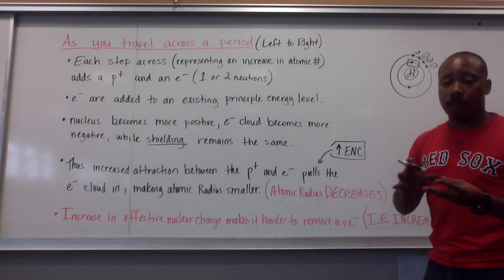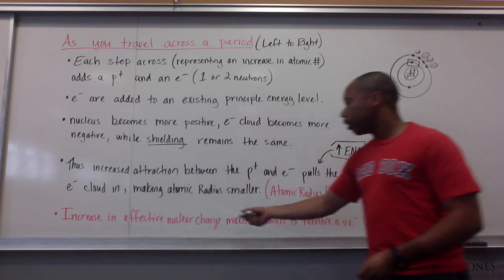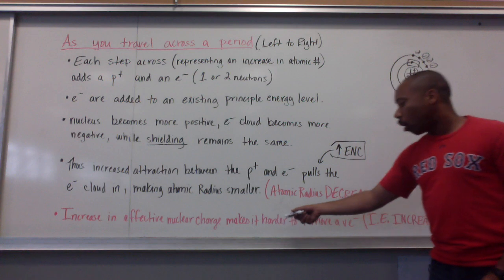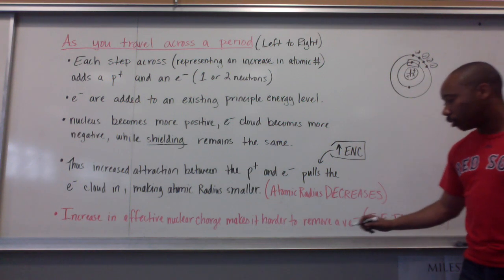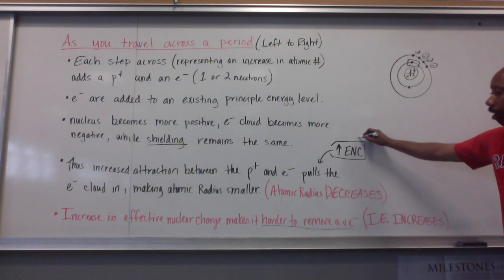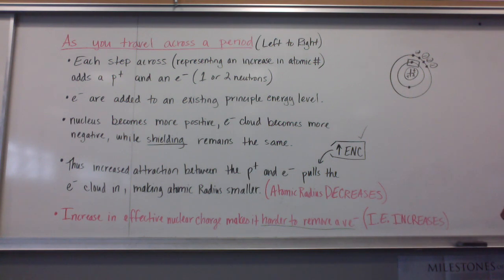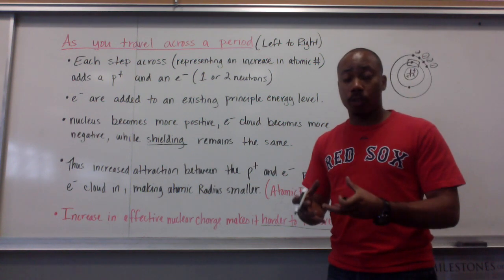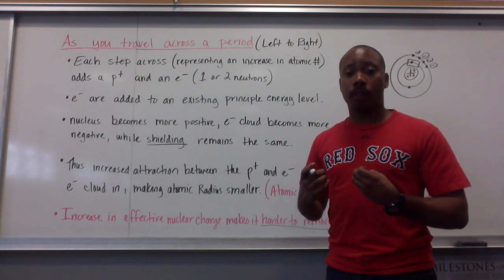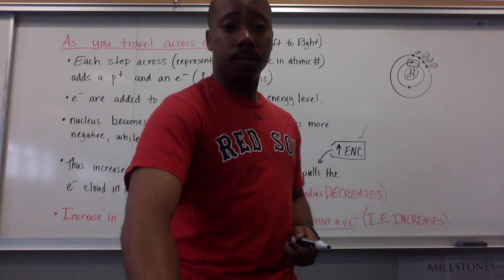Because my atomic radius is getting smaller and I have an increase in effective nuclear charge, this makes it harder to remove a valence electron. When it's harder to remove a valence electron due to this high effective nuclear charge, my ionization energy will increase. An increase in ionization energy simply means that you need more energy in order to remove an electron — it becomes harder. So gentlemen, please take notes and ask questions tomorrow. Adios.